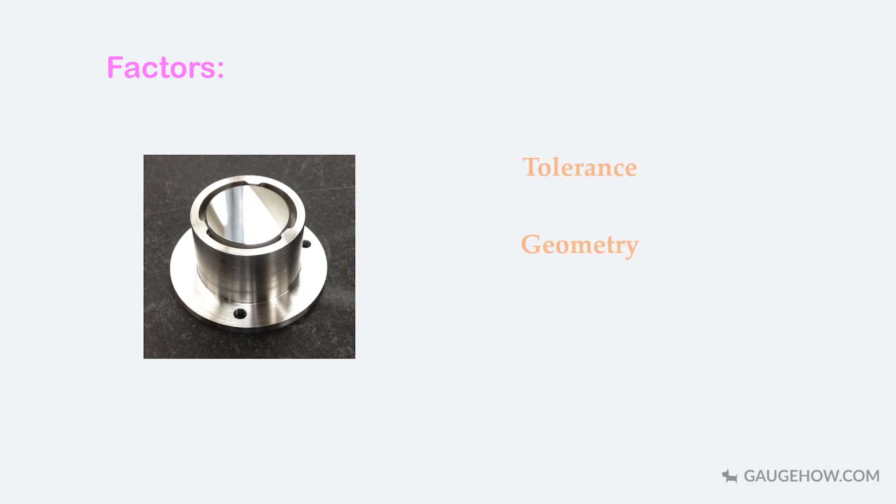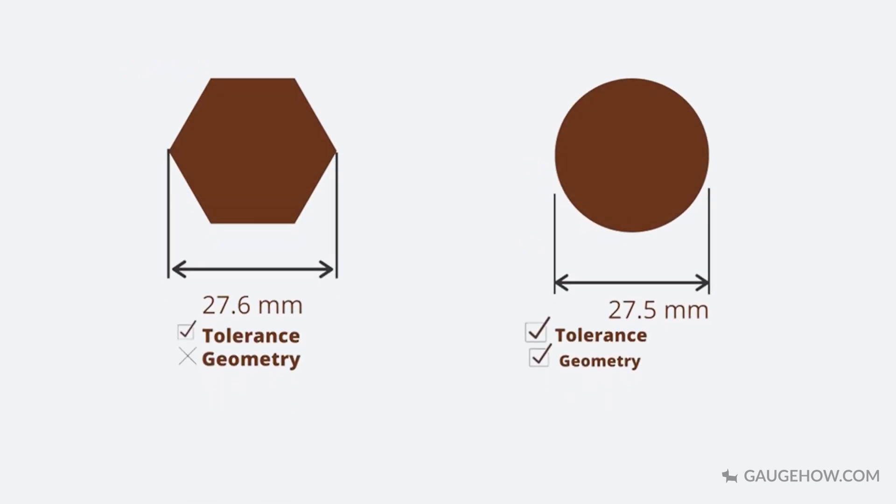For example, in the inspection of a circle having diameter of 27.5 mm with tolerance of 0.5 mm, the first product is a pentagon, so it does not qualify because it does not satisfy its geometrical tolerance. On the other hand, the second product satisfies its geometrical as well as dimensional tolerance, so this product is accepted.